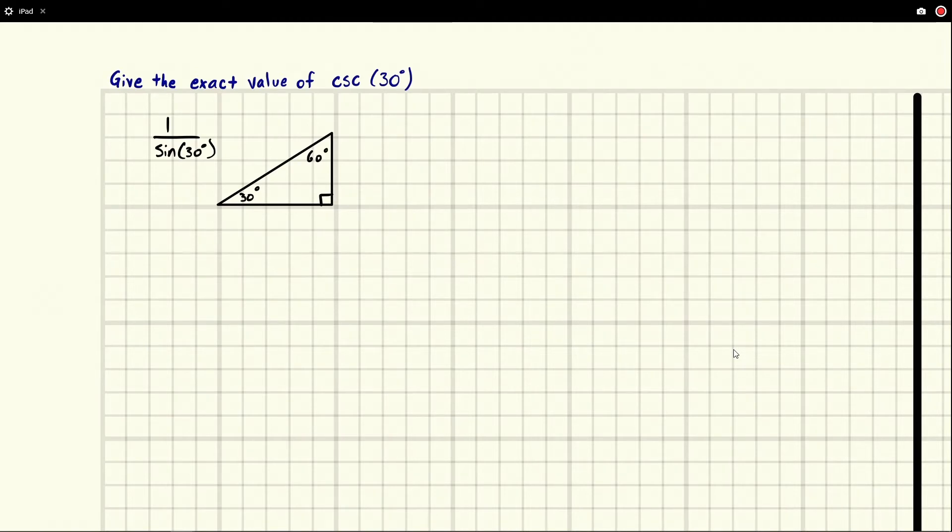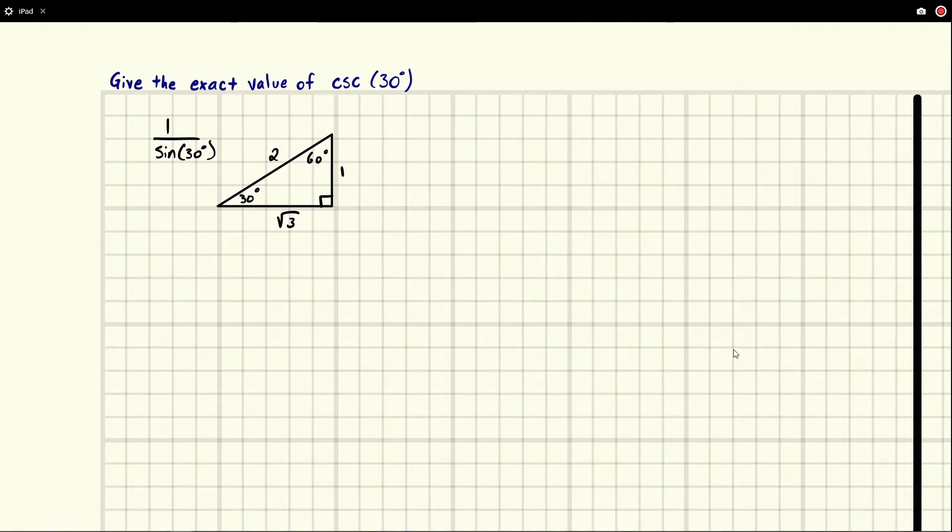This is a special triangle where we have a 1, 2, 3 triangle, or 1, square root of 3, and 2. This is one of the triangles that you're expected to know for this section.